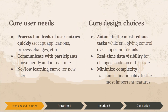Considering those needs, we came up with these design choices. We knew we needed to automate the most tedious tasks and still give control to admin where necessary. The second was real-time data visibility for changes made on either side, making it easy for participants and producers to make changes without heavily affecting the other. The last core design choice was to minimize complexity — we wanted to limit the functionality to the most important features so that we didn't have extra things taking up time and space on the user's screen.